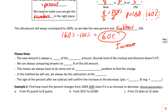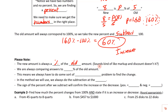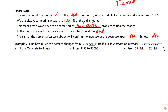Let's take a look at some notes. The new amount is always a percent of the old amount — similar to a markup or discount problem. We are always comparing the answer to 100%, which means we always have to do some subtraction. The sign of the percent after we subtract will confirm whether it's an increase or decrease: positive means increase, negative means decrease.